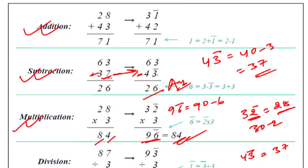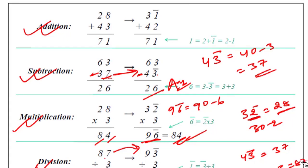Similarly, we can do division. In division, we are going to convert 87 into 93 bar. Why? Because 93 bar equals 90 minus 3, which is 87. So I write it as 93 bar, divided by 3. 3 divided by 3 is 1 bar.